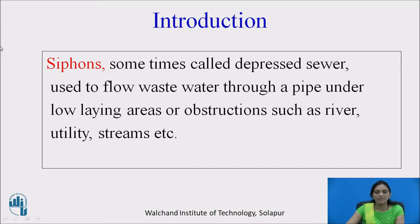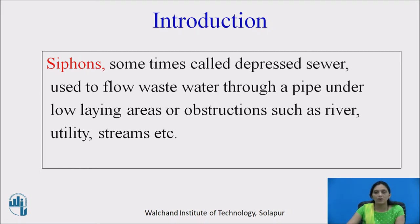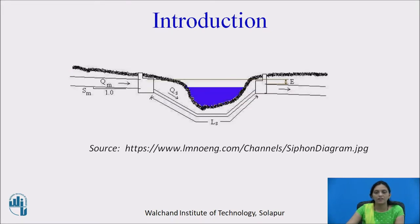A siphon is a pipe carrying generally liquid from one container to another. A siphon, sometimes called a depressed sewer, is used to flow wastewater through a pipe under low-lying areas or obstructions such as a river, utility, stream, etc. In the diagram shown, the siphon transfers sewer from one container to another, crossing the stream or river.